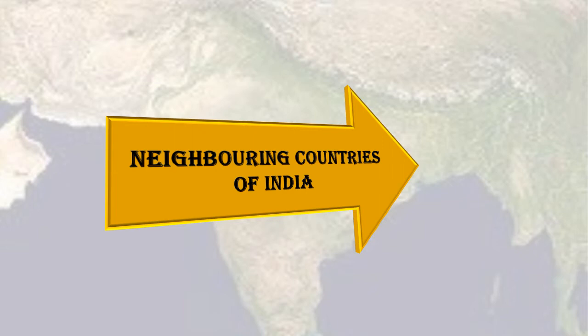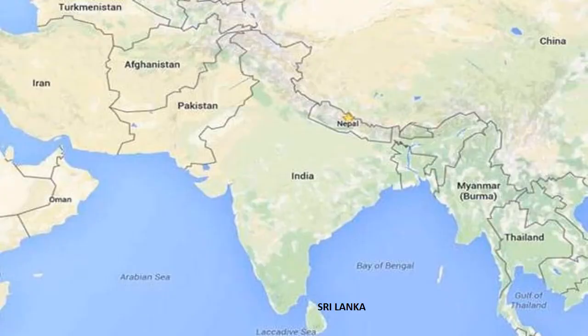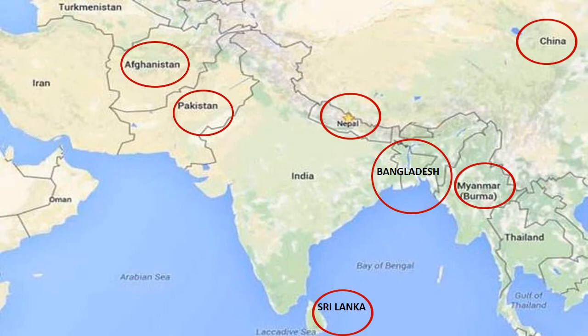Now we will move ahead and learn about India's neighboring countries. India's neighboring countries are Pakistan, Afghanistan, China, Nepal, Myanmar, Bangladesh, and Bhutan. In the south lies the island country of Sri Lanka, which is separated from India by the Palk Strait and the Gulf of Mannar. The Maldives, which is located very close to the Lakshadweep Islands, is also a neighboring country.